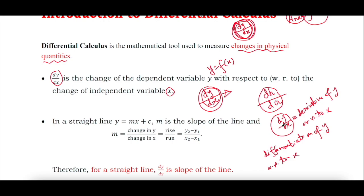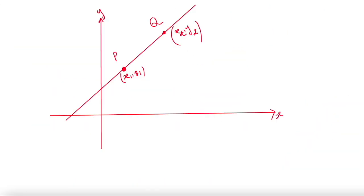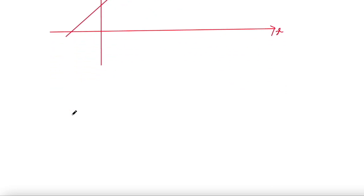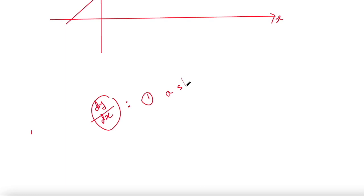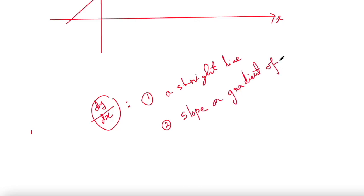Now, how can we understand dy/dx more easily? Before that, we need to understand slope. When thinking about dy/dx, you need to keep two things in mind: first, a straight line, and second, the slope or gradient of that straight line.